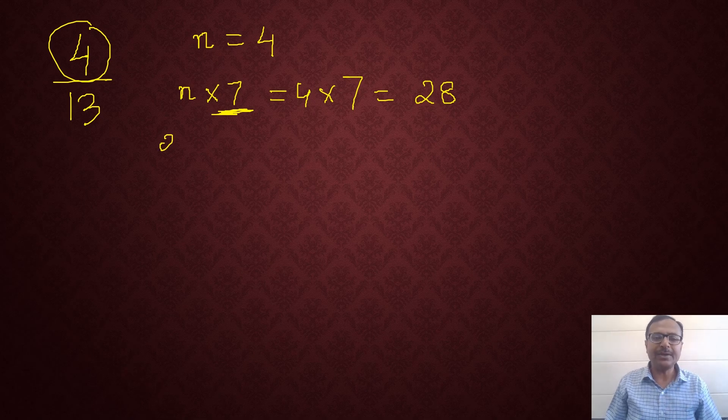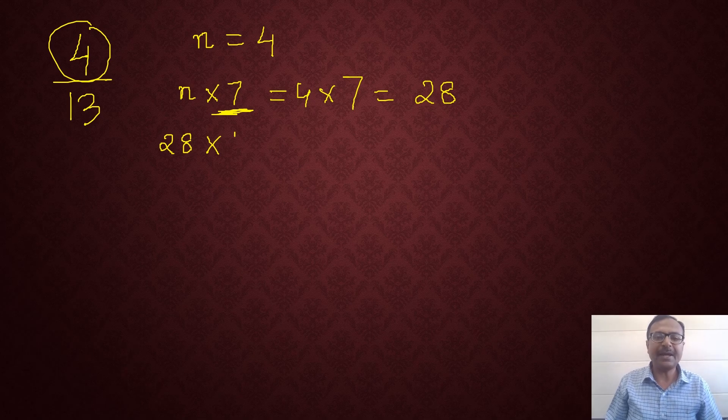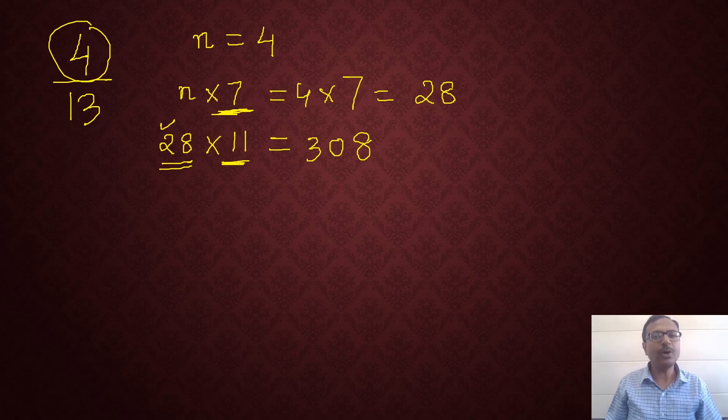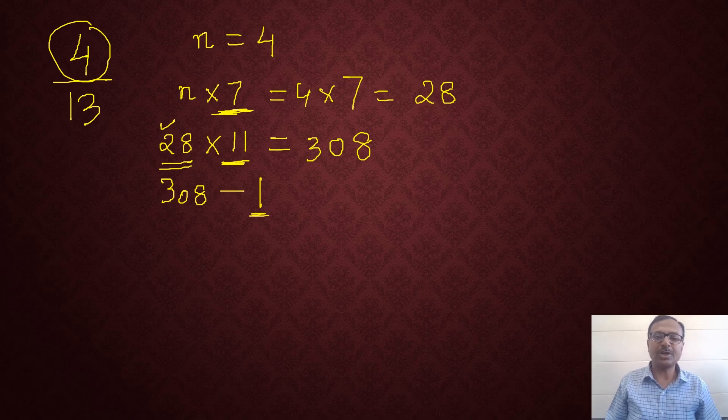Now, after getting 28, you will use 28 and then use another fixed multiplier and that multiplier is 11. Multiply 28 by 11. You can use Vedic Maths there. 8 and then 8 plus 2 is 10. 10 means 0 and a 1 carry. Then add 1 to this 2. You get 308. See, I have used Vedic Maths in multiplication by 11 also. That's how you become smarter. Now, the number which you have obtained 308 is to be reduced by 1. So you get 307.